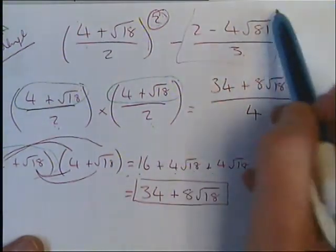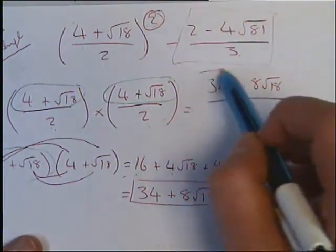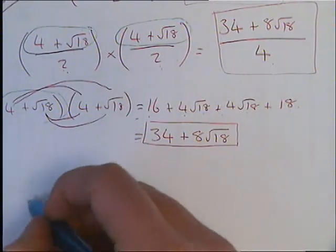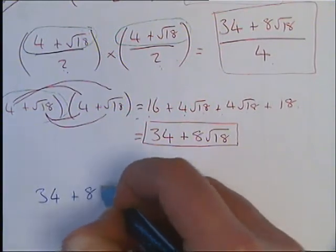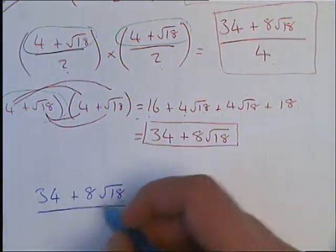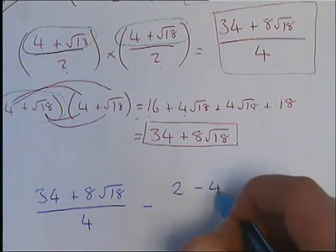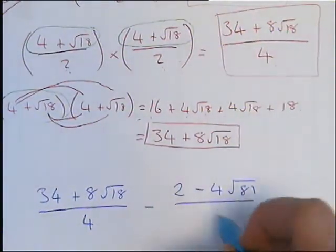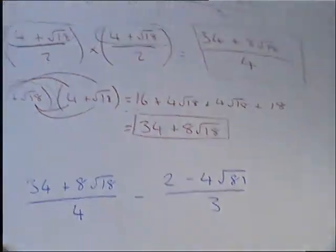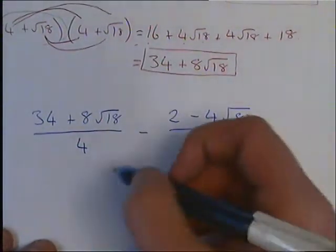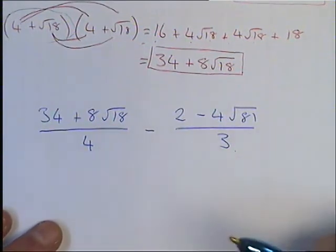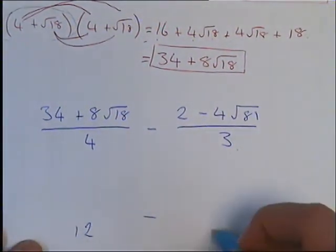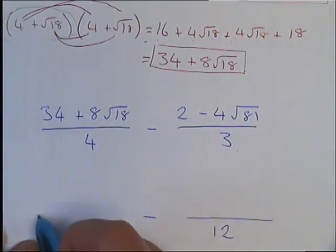And then we've still got to take our fraction away from this fraction here. So now if I take this part and bring it just beneath, we've got 34 plus 8 root 18 all over 4, take away 2 minus 4 root 81 all over 3. And now we just need to take them away. We're going to treat it exactly the same as any other style fraction. So we need to find our common denominator. We're going to times our current denominators together. So 4 times 3 is 12. So we're going to have 12 on the bottom.